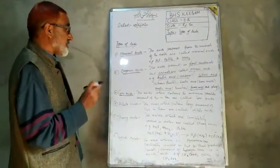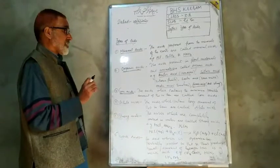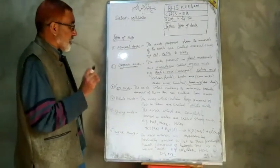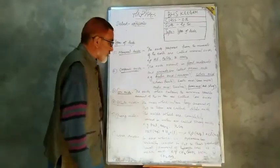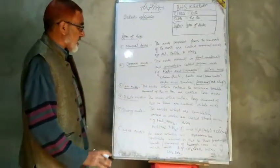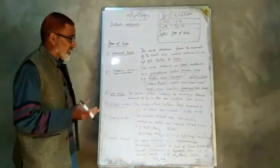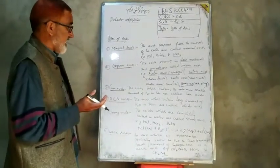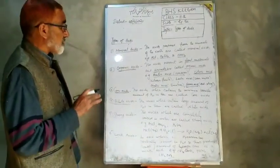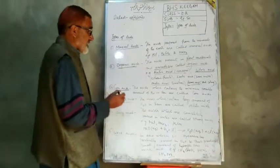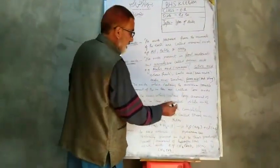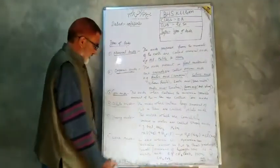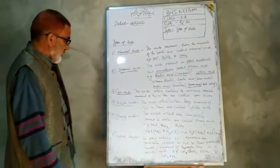Concentrated acid has the minimum amount of water. The acids which contain a large amount of water in them are called dilute acids.